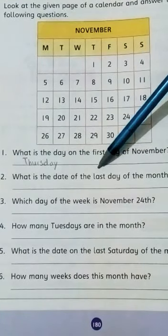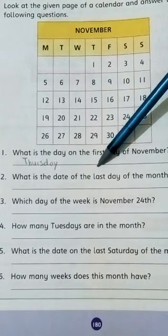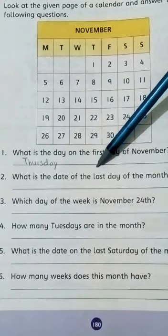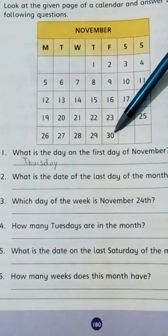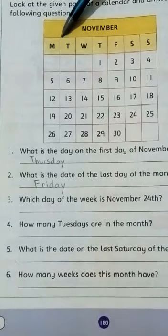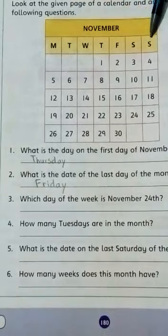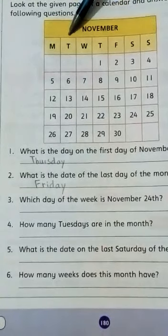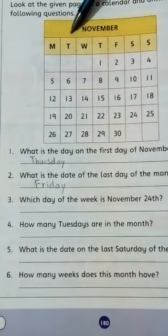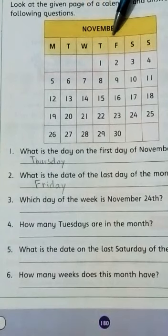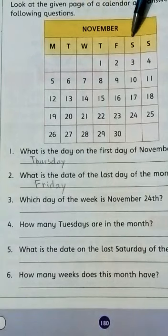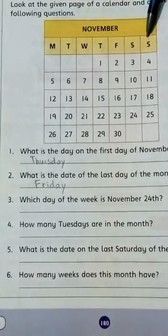Question number 2. What is the date of the last day of the month? The last day of the month is Friday, 30th. Now let me explain the abbreviations. M for Monday, T for Tuesday, W for Wednesday, T for Thursday, F for Friday, S for Saturday and S for Sunday. Okay beta.